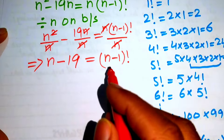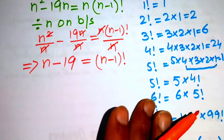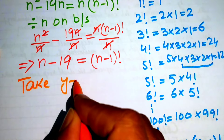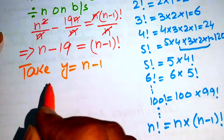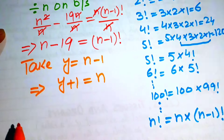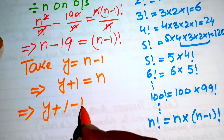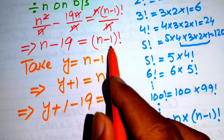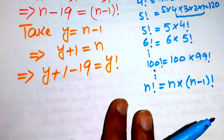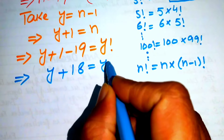Now we convert (n minus 1) factorial into a simpler form by letting y equal n minus 1, so that n equals y plus 1. We substitute these into the equation: (y plus 1) minus 19 equals y factorial. Simplifying the left-hand side gives us y plus 1 minus 19, which is y minus 18, so we get y plus 18 equals y factorial.